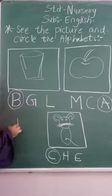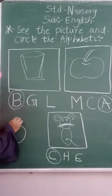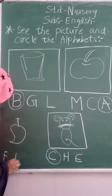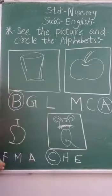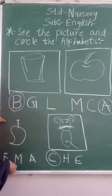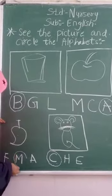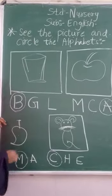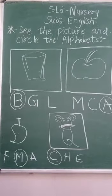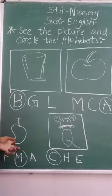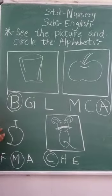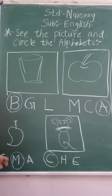A picture will be given like this — which picture is this? Mango. Mango comes from M. M for Mango. So you have to circle M. M for Mango, M for Monkey, M for Man — all come from M. You have to circle the letter M for whatever starts with M.